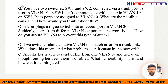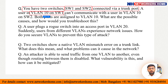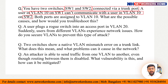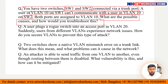Next: you have two switches — Switch 1 and Switch 2 — connected via a trunk port. Now a user in VLAN 10 on Switch 1 cannot communicate with a user in VLAN 10 on Switch 2. Both ports are assigned to VLAN 10, so both Switch 1 and Switch 2 belong to VLAN 10. What are the possible causes and how would you troubleshoot this?